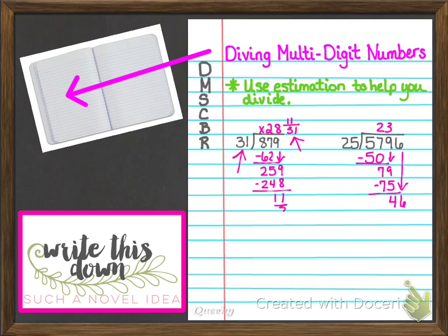25 only goes into 46 one time — if I say 2 times, I need 50 and I don't have enough, so it has to be 1. 1 times 25 is 25. I subtract: 6 minus 5 gives you 1, 4 minus 2 gives you 2. Now I have no other numbers left over at all, so I'm going to bring my remainder up, which is 21, and put it over a denominator of 25 — that is the number I divided by, my divisor. So you can see it's really not too bad.